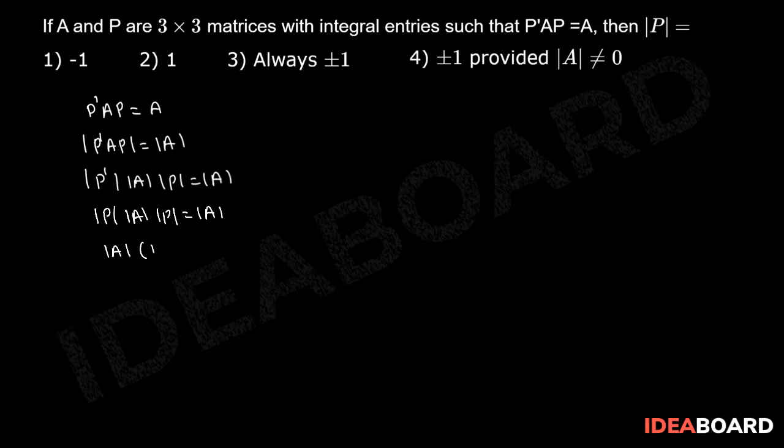Now, this implies |A| × (|P|² - 1) equals 0, which implies |P|² - 1 equals 0.